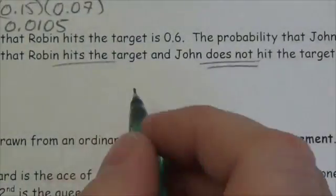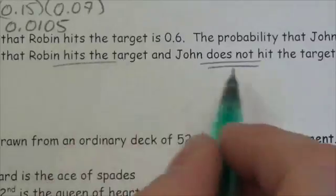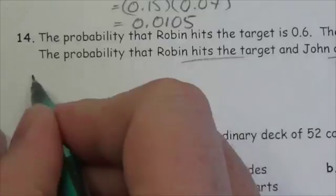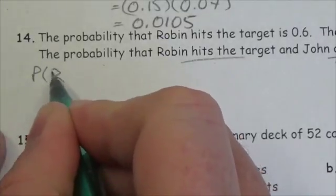Okay, so we got a couple things going on here we got to pay attention to. Hits the target and John does not hit the target. So the events that we're looking for here is the probability that Robin hits the target.